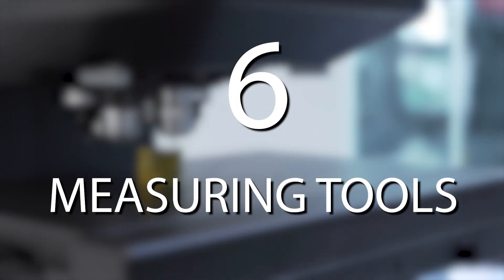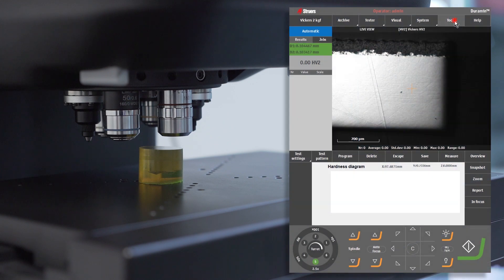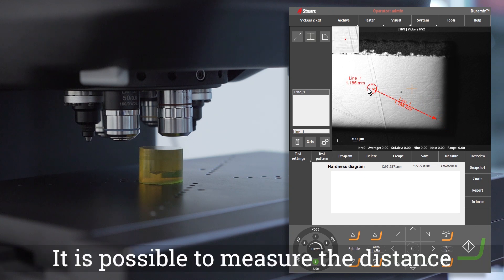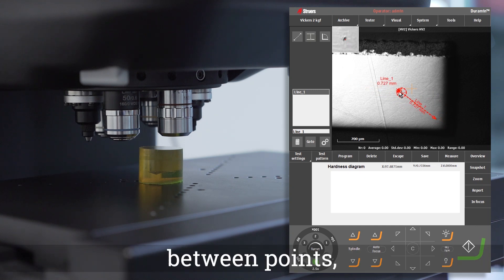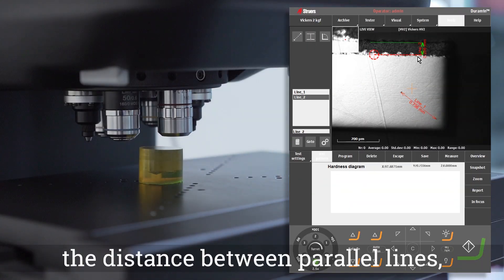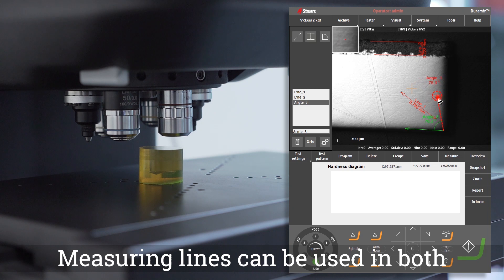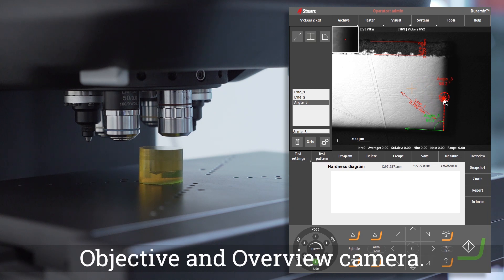Measuring Tools. We can use the measuring tools as construction lines. It is possible to measure the distance between points, the distance between parallel lines and angles. Measuring lines can be used in both objective and overview camera.